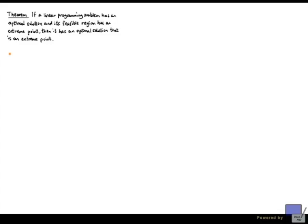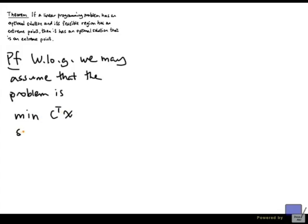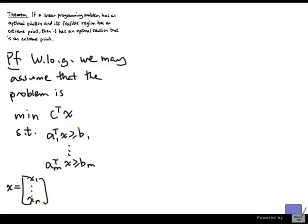So let's get to the proof. First of all, we may assume without loss of generality that the linear programming problem is of the following form. Minimize C transpose x subject to a_i transpose x greater than or equal to b_i for i = 1 to m, where x is x_1 up to x_n. So there are m constraints and n variables.